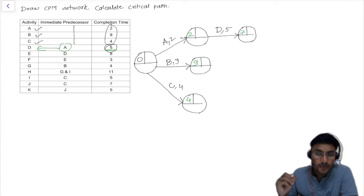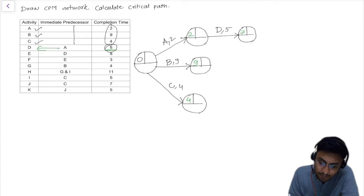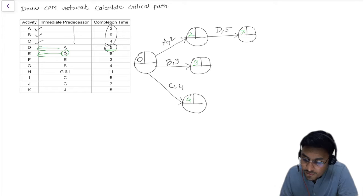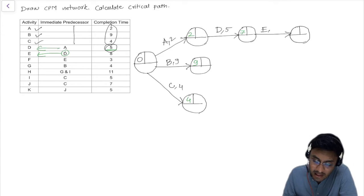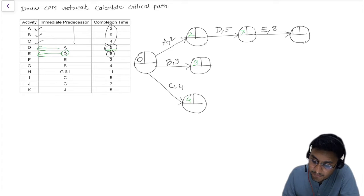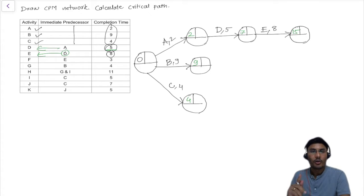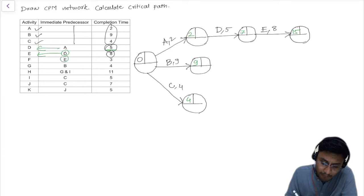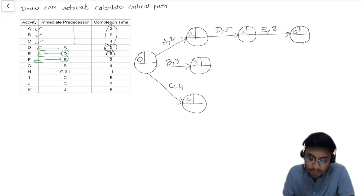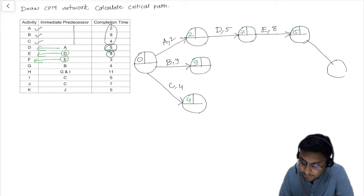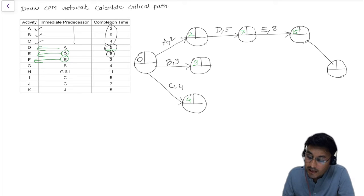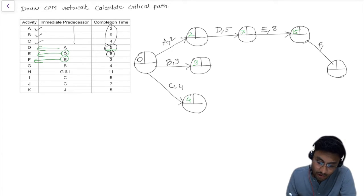Once D activity completes, E activity will start, which has a duration of 8. So 7 plus 8 becomes 15. Once E activity completes, F activity will start, and F activity has a duration of 3.